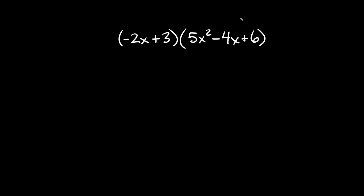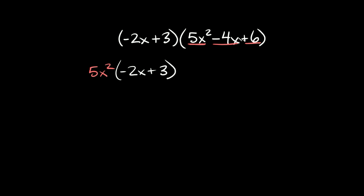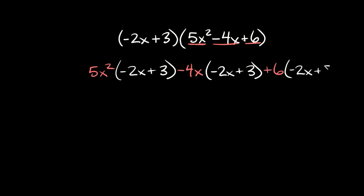Next we have a binomial times a trinomial, but it's basically the same idea — you're going to take the trinomial and distribute it into the set of parentheses. We're going to multiply the binomial (negative 2x plus 3) by each of the three terms. So we write: 5x squared times (negative 2x plus 3), then negative 4x times (negative 2x plus 3), and then plus 6 times (negative 2x plus 3).